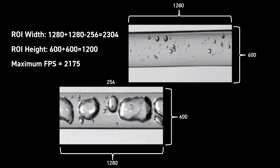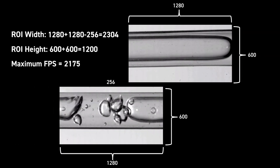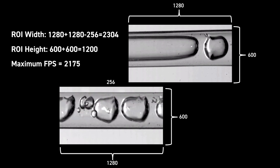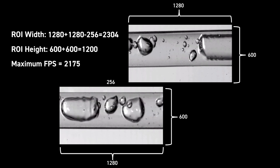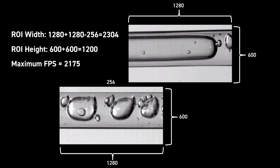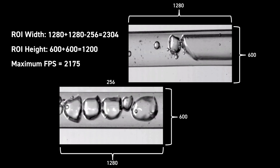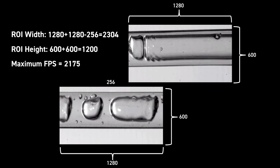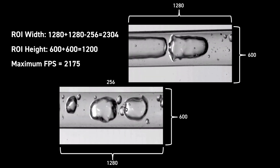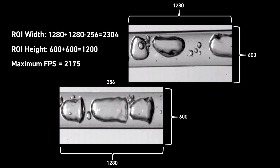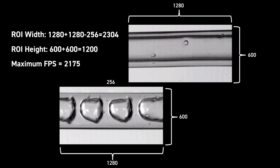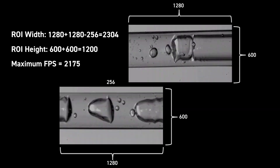Imaging speed and algorithm processing speed used to be big technical obstacles for cytometry. Now, with machine vision cameras like the S641, cytometry is a viable diagnostic tool in point-of-care applications.